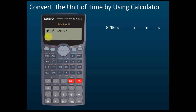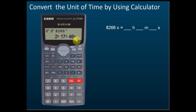After you key that in, press equal. Your calculator will show 2 degrees, 17 minutes, 46 seconds. Since we learned that this is the same as the unit of time, 8266 seconds equals 2 hours, 17 minutes, 46 seconds.